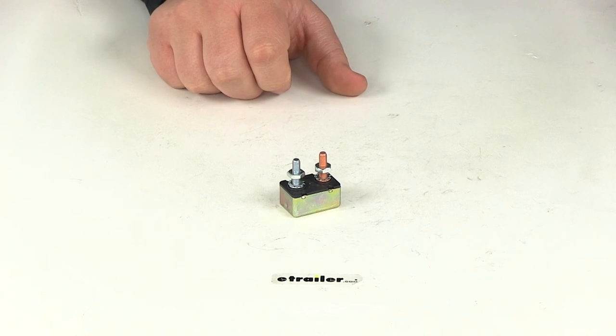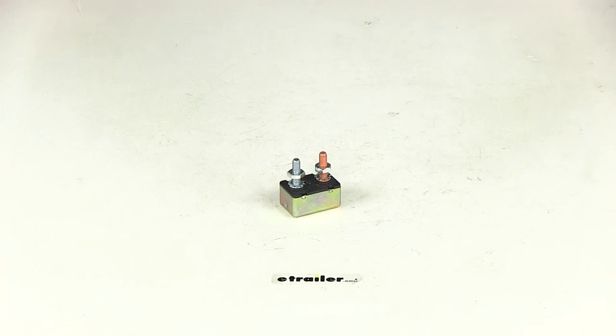That's going to do it for our review of part number PK54-130. This is the single pole 30 amp thermal circuit breaker from Pollock.